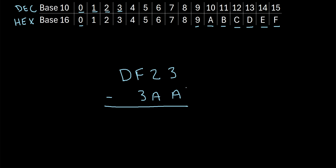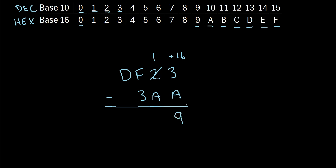We can't do that because 3 is smaller than 10, so just like ordinary subtraction, we have to borrow from the next column. So this 2 becomes a 1. Now in the decimal system, we would add 10 to this column, but remember we're working with hexadecimal numbers, so instead of adding 10, we're going to add 16. So we cross out the 2, make it a 1, and add 16 to this column. Now we have 3 plus 16, which is 19, minus A — or 19 minus 10 — which is just 9.